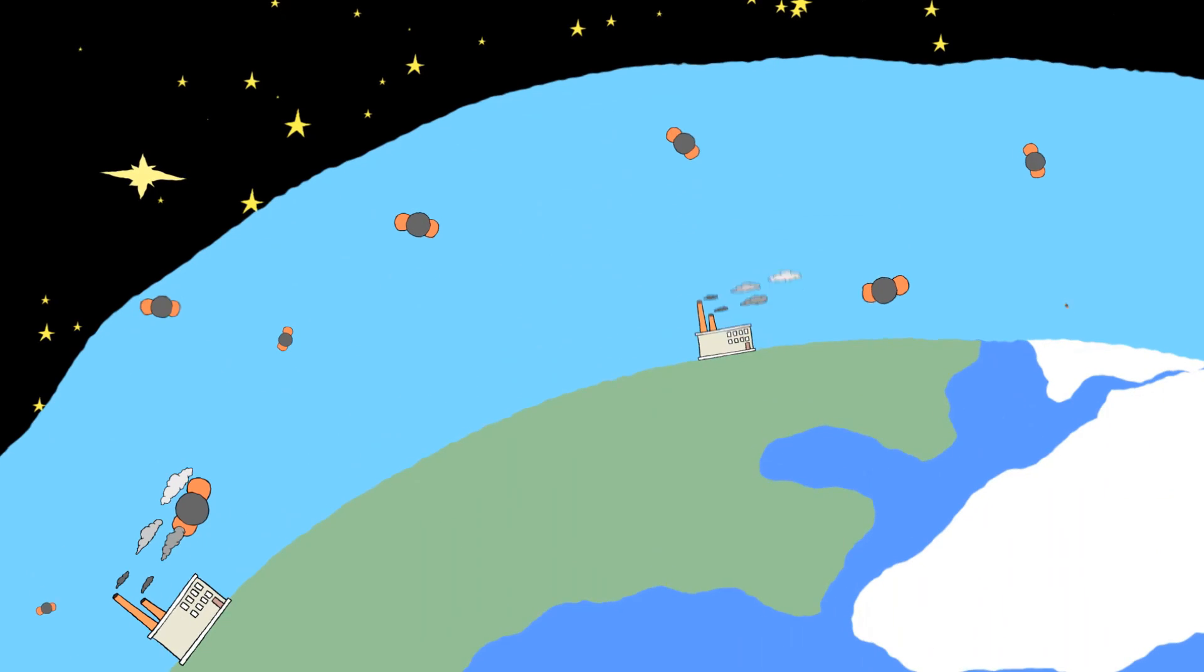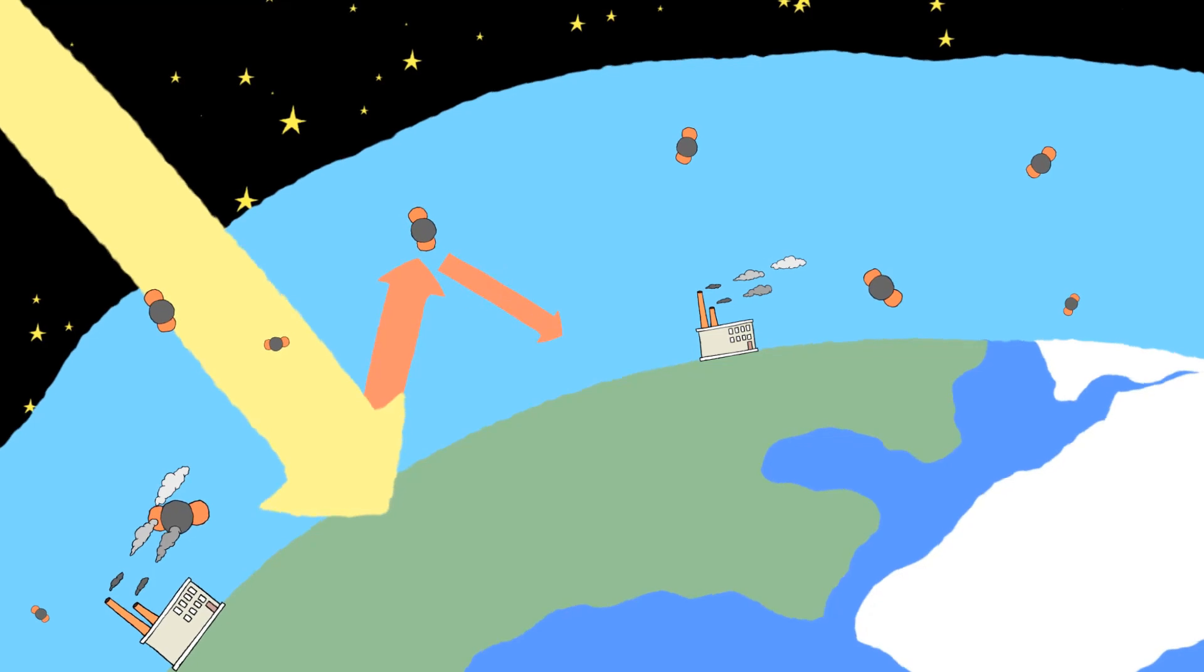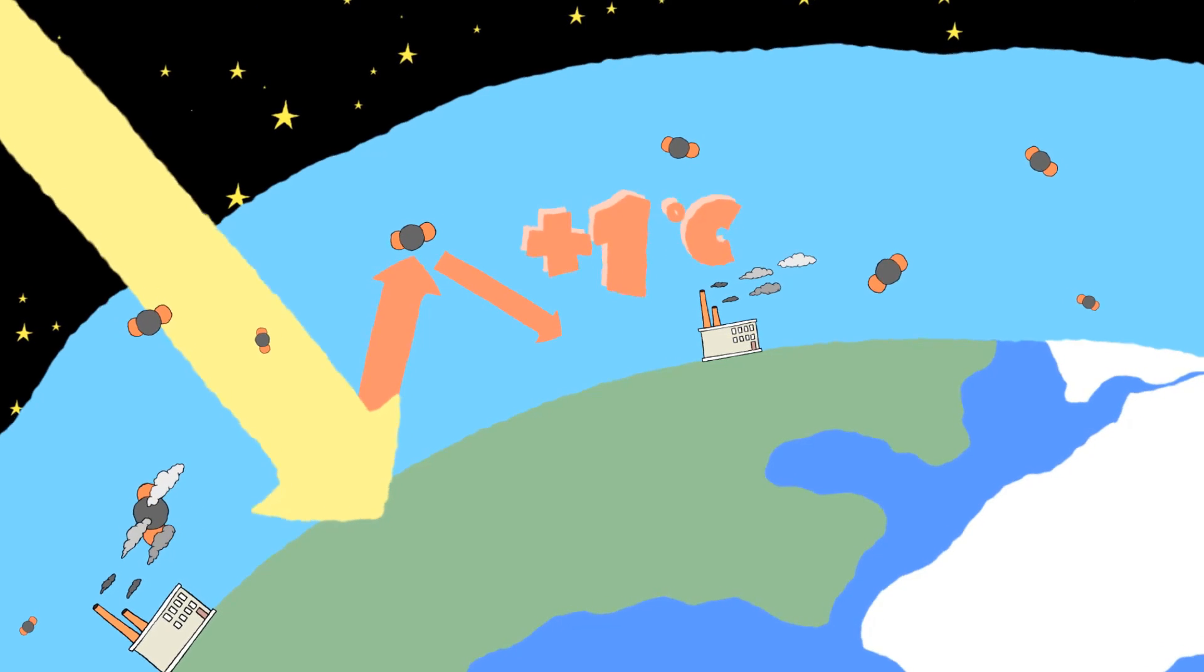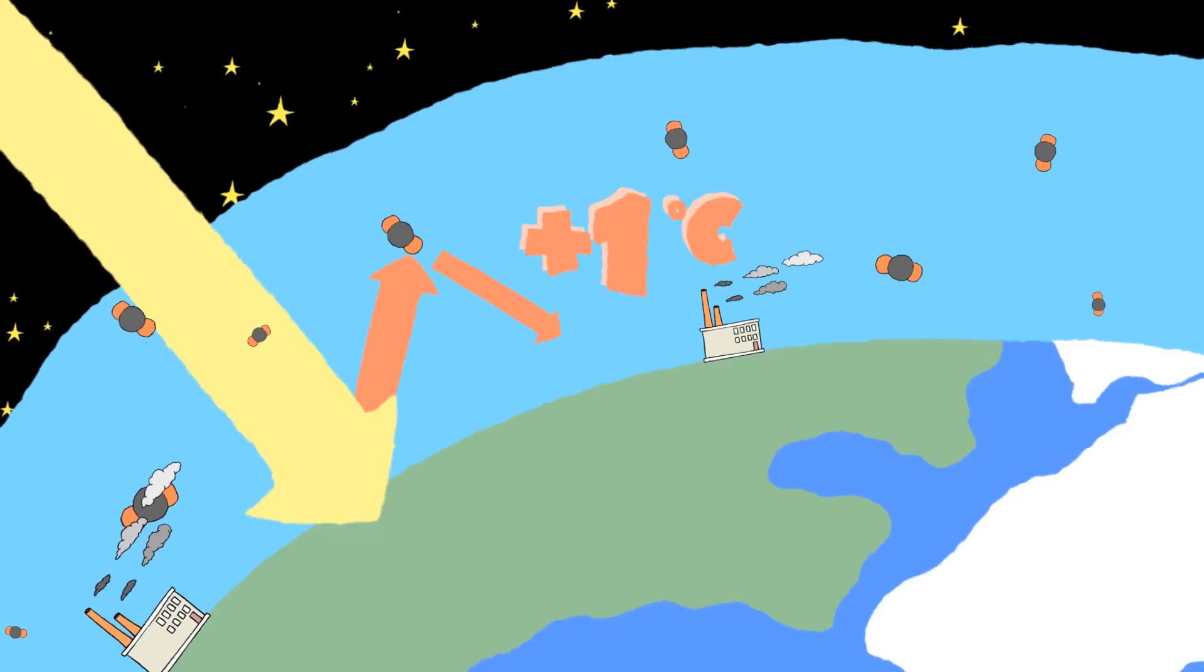But coal, oil, and gas release a lot of carbon into the atmosphere, and all that carbon has warmed our planet about 1 degree Celsius so far. And the more we add, the warmer it's going to get.